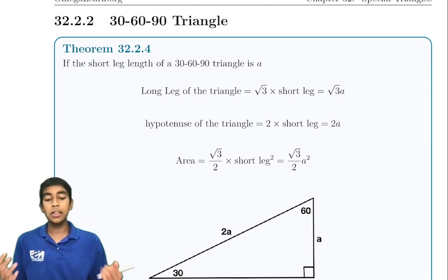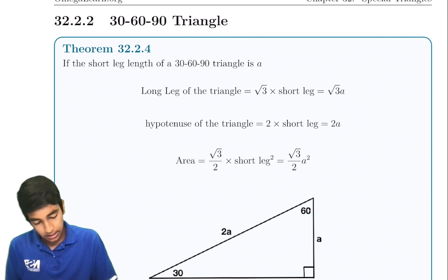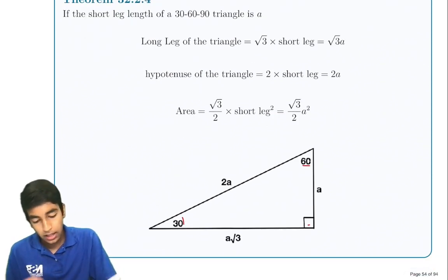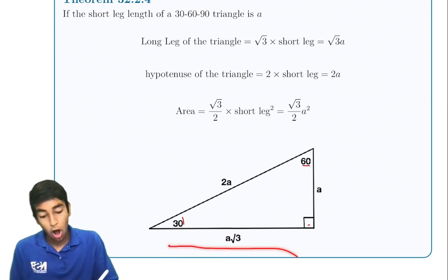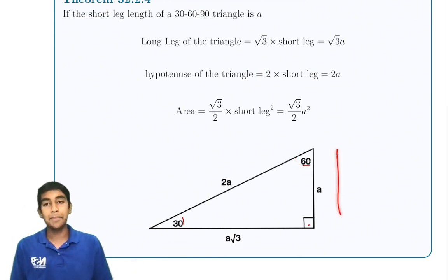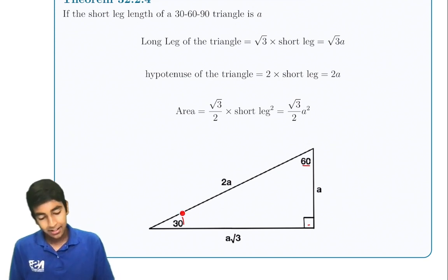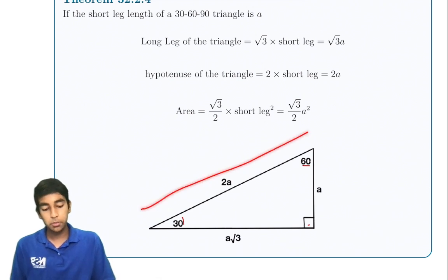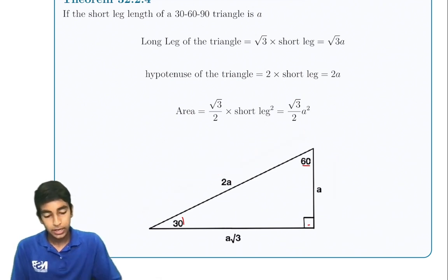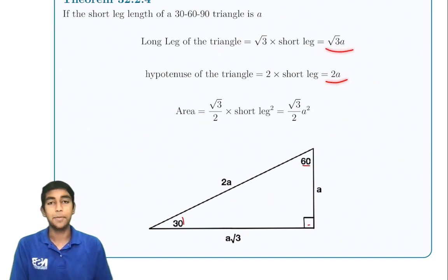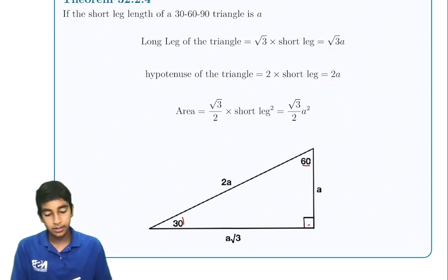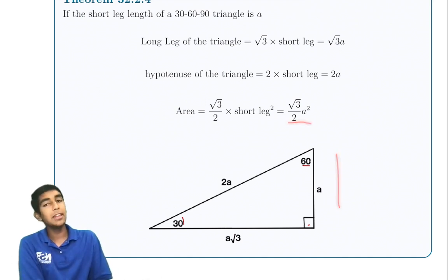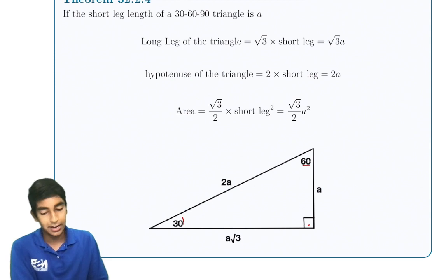In a 30-60-90 triangle, the long leg (opposite the 60° angle) is √3 times the short leg (opposite the 30° angle), and the hypotenuse is double the short leg. The area of a 30-60-90 triangle is (√3/2) times the short leg squared, though you can easily derive this from the standard area formula.